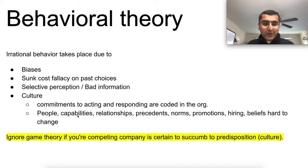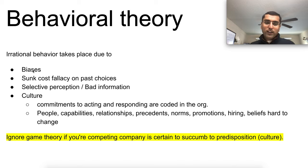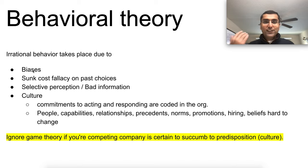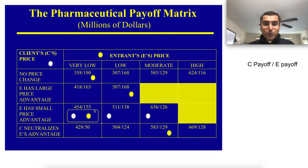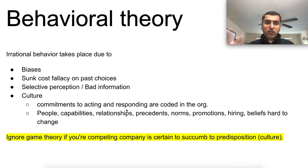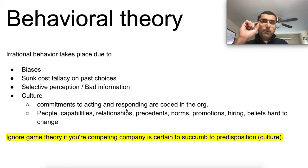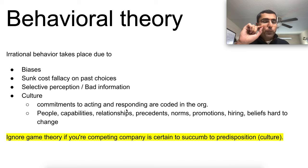But what happens when you cannot expect rational behavior? Then irrational behavior takes place for various reasons: biases from past experiences, sunk cost fallacy where past choices overweigh present decisions, bad information — maybe the competitor miscalculates their payoff. And the most important factor in behavioral theory is culture. Companies are often predisposed to act and respond in certain ways based on their culture.